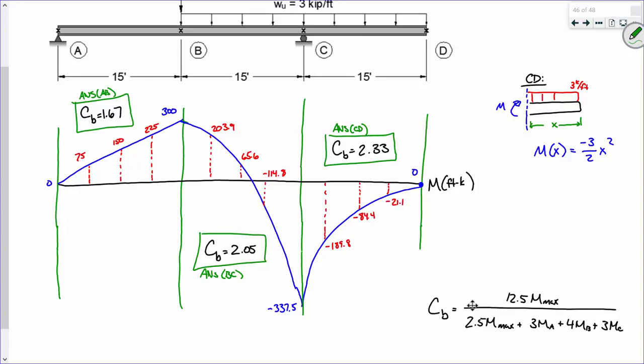And your maximum within that segment is 300 foot-kips. For segment BC, instead of your maximum moment being 300, your maximum moment is 337.5. Remember, you're thinking in terms of the magnitude. So the large magnitude moment within segment BC is actually at C, so it's 337.5, not 300.